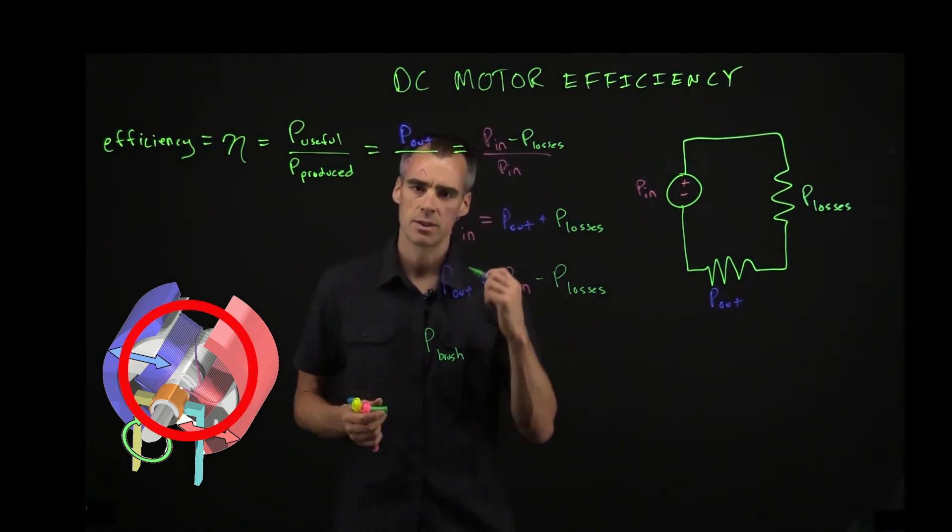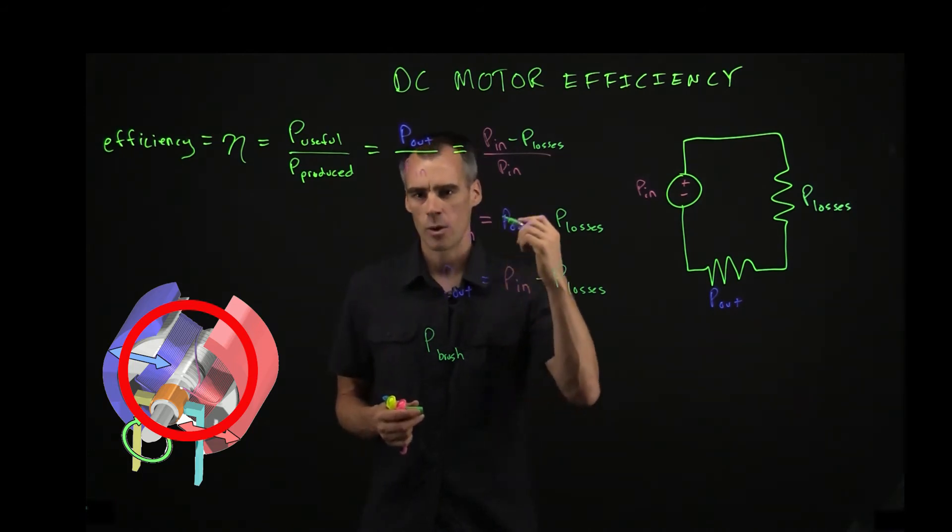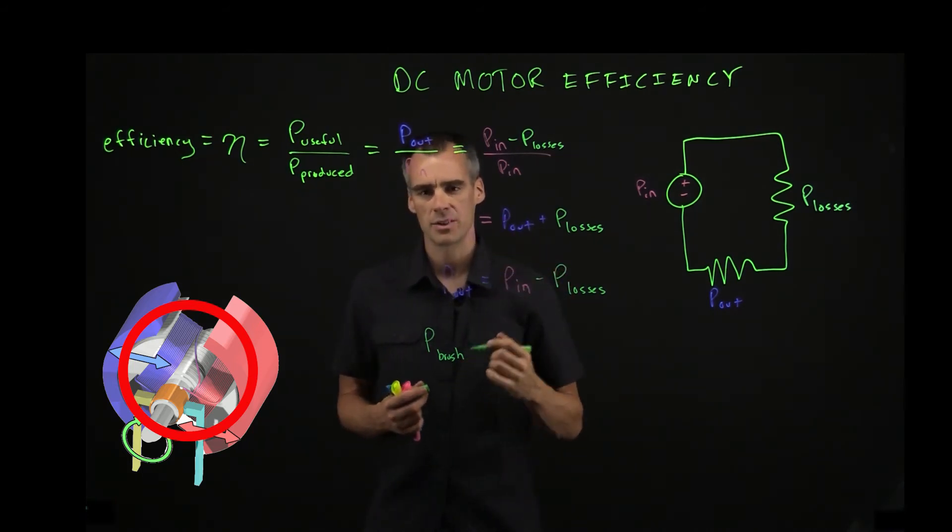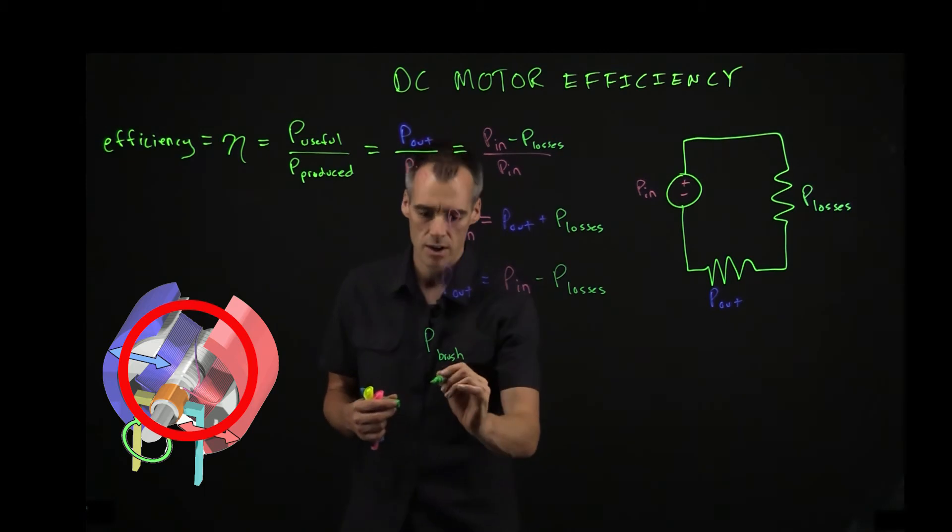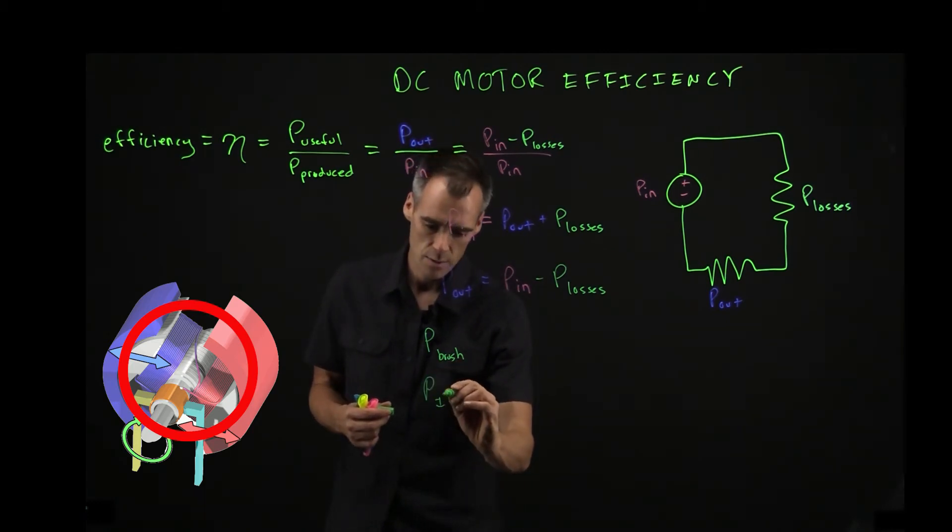And another one is going to be that current is going through that coil around the electromagnet, and that current is going to generate some heat, some I squared R. So we'll call that P I squared R, or heat.